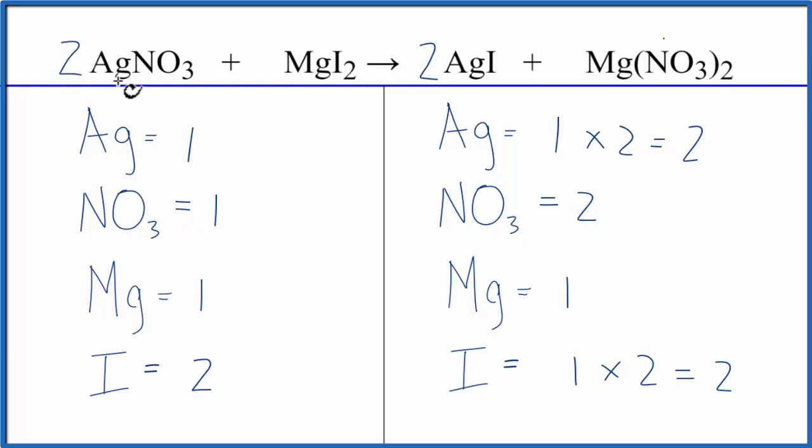We put our coefficient of two in front of the AgNO3. One times two, that balances the Ags, and then one of our nitrates times the two. That gives us two of those. Yep, that balances the nitrates, and we're done.